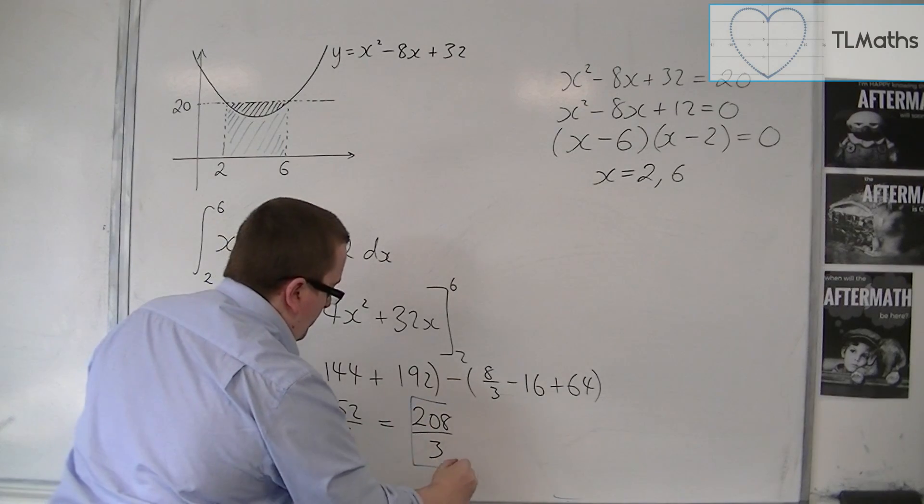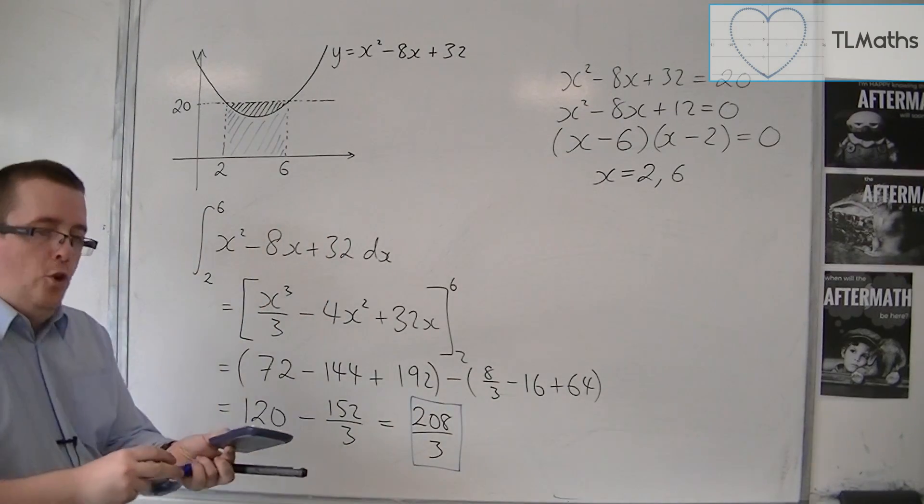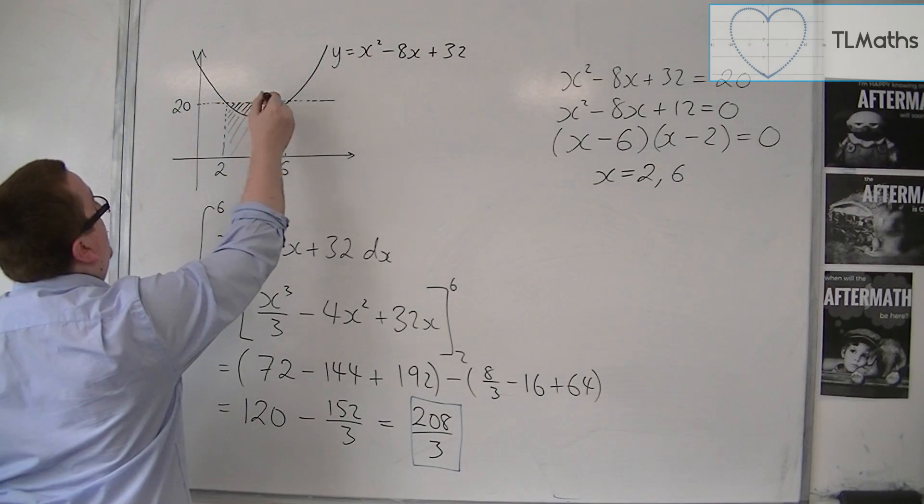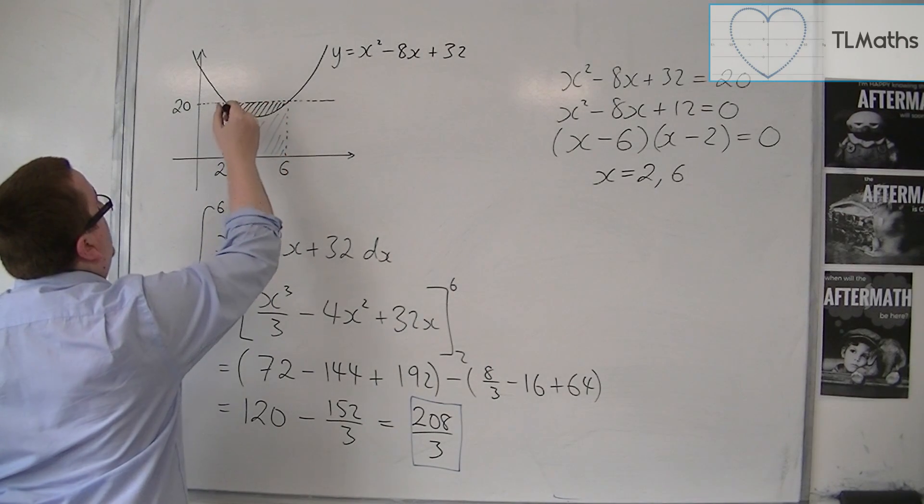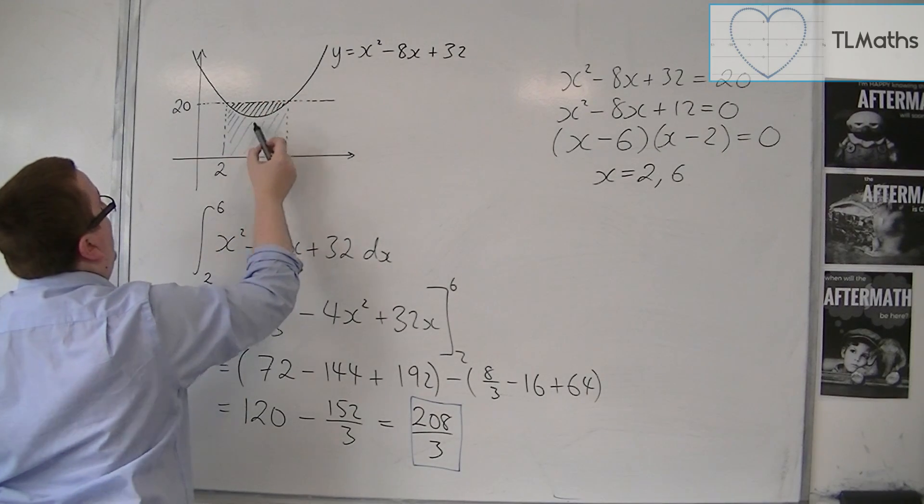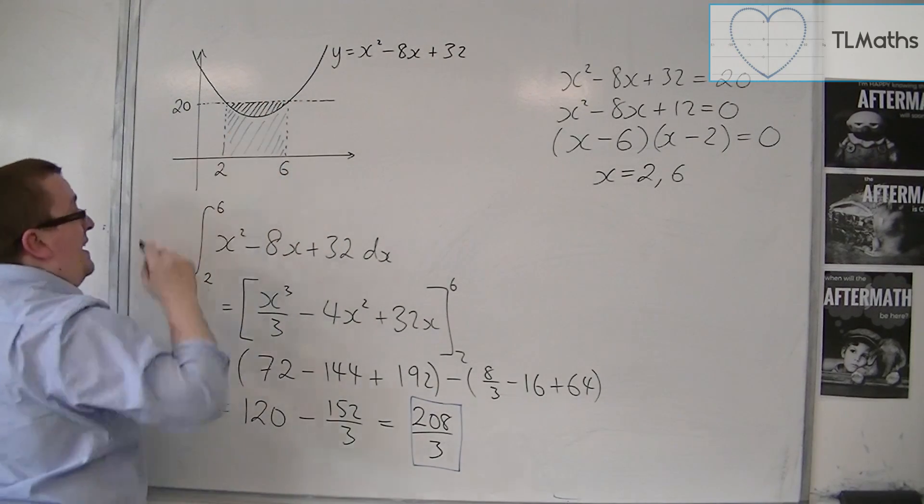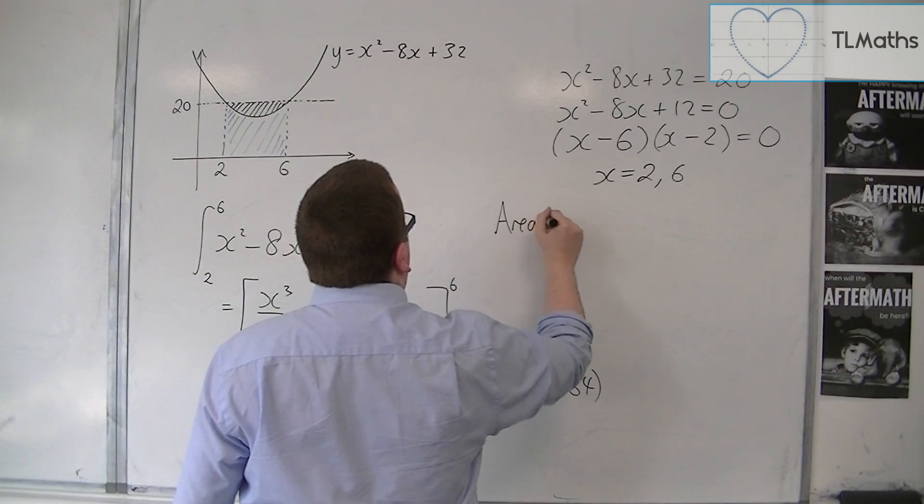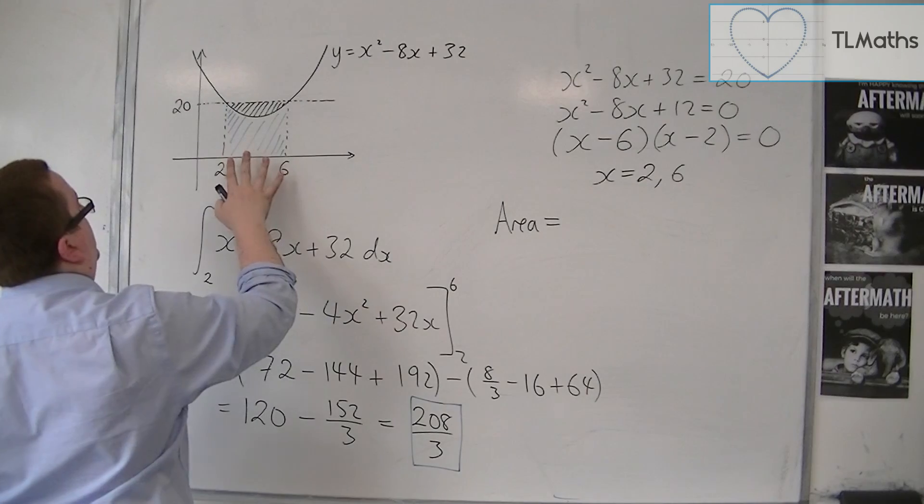So it's not quite the bit I want. What I want is the shaded area here. So if I work out the area of that rectangle, and then take away the blue area, I'm going to be left with the bit that I want.